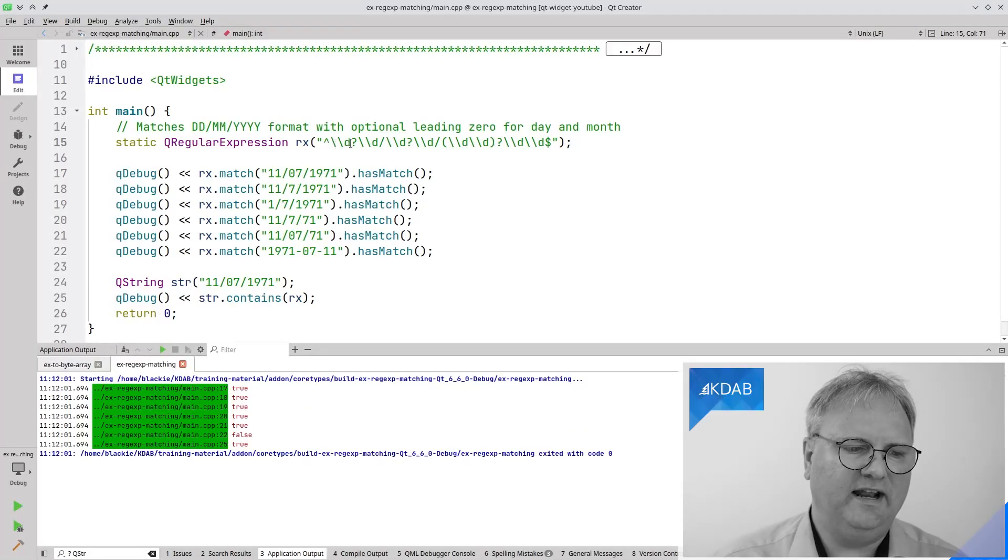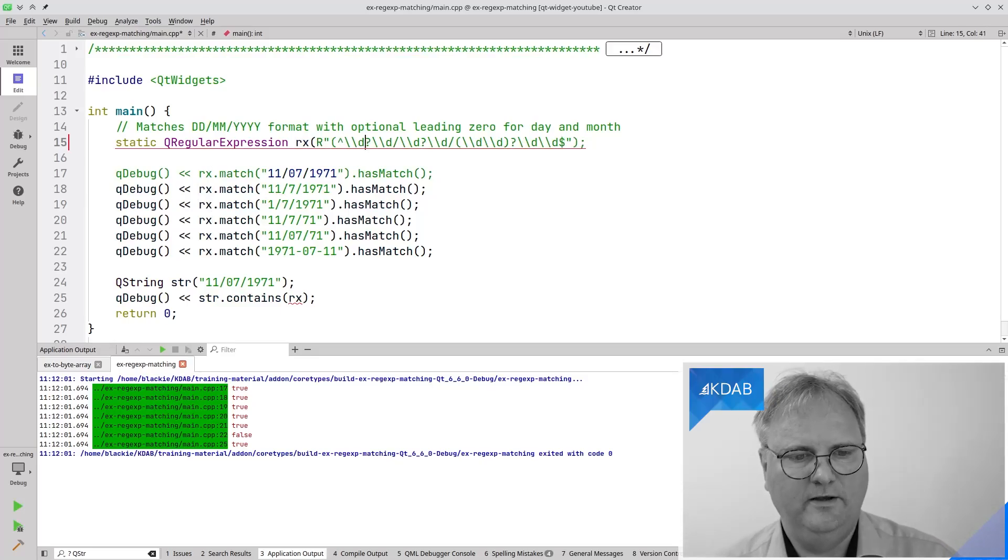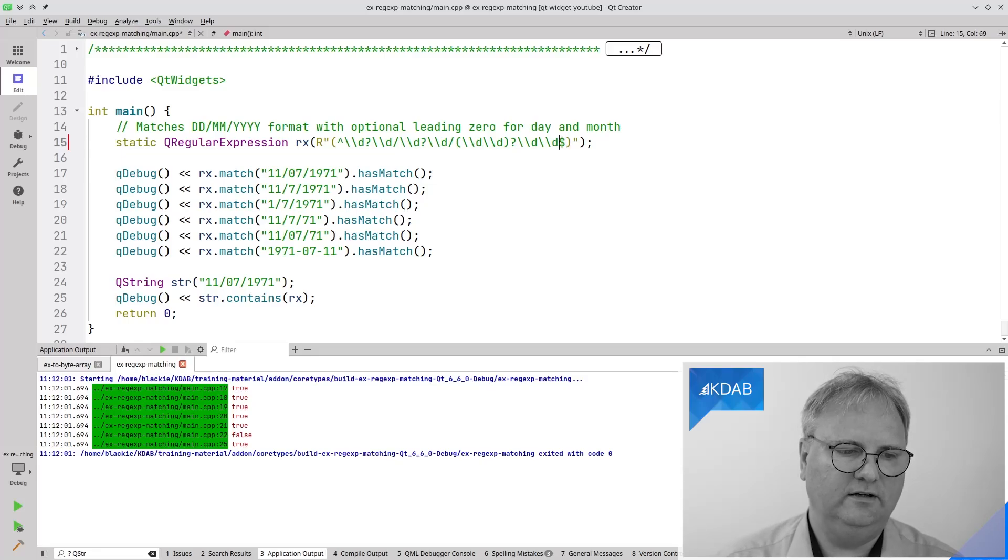ChatGPT told us that backslash backslash D meant a digit, but that's not true. It's actually only backslash D that means a digit. Backslash backslash is because I have a backslash. There is, in 2011, a new version of C++ that introduced this raw string, which is really useful here. R, and then I need the parenthesis on the inside here and at the end here, like this.